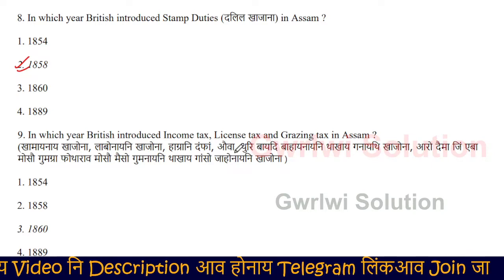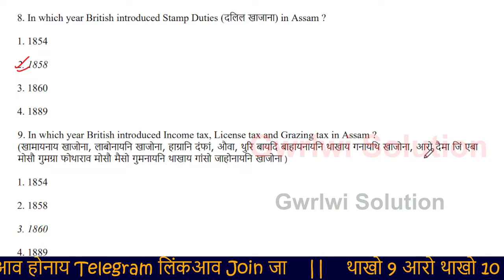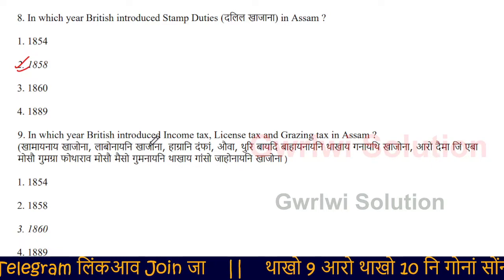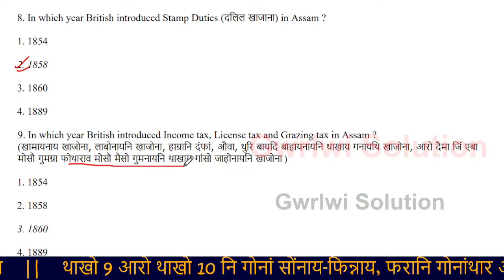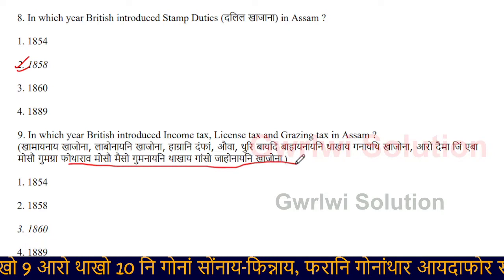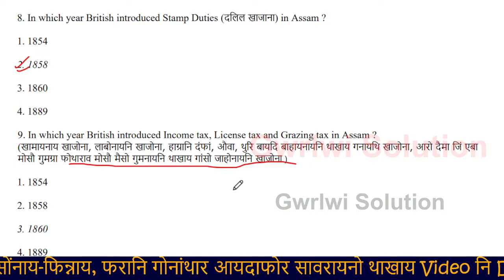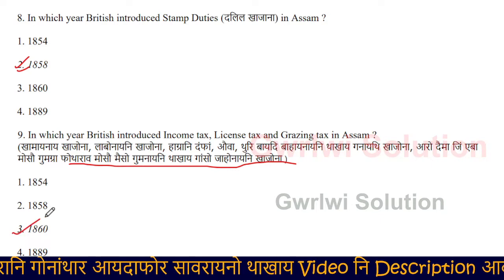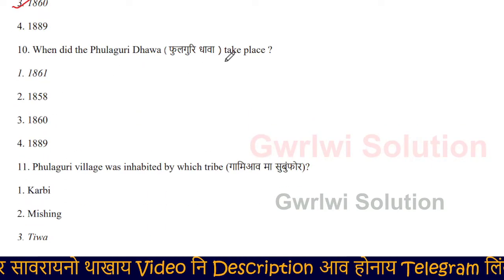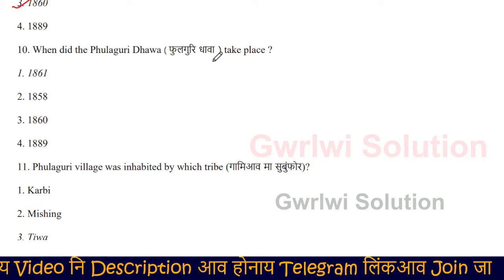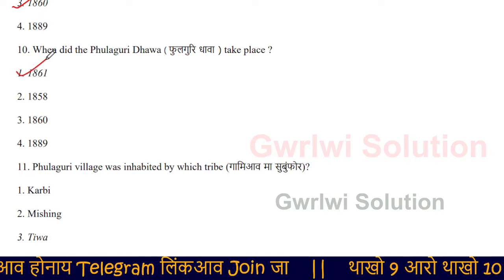The British introduced income tax, license tax, and grazing tax in Assam. These taxes were introduced in 1860.